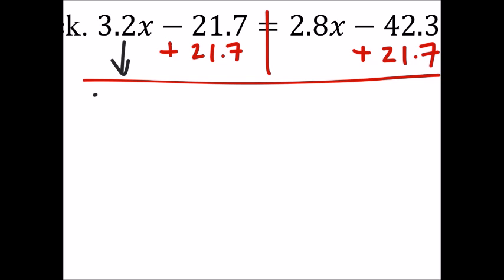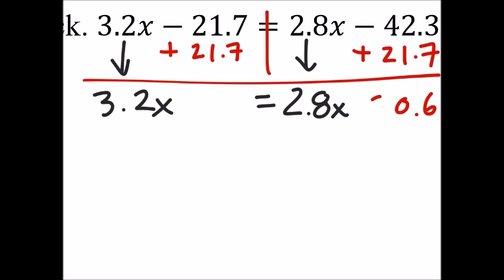And we still have this 3.2x, and we haven't done anything with the 2.8x. And negative 42.3 plus 21.7 is, what the heck is that? 6, 0, 20.6. So minus 20.6. So that's a negative 42.3 there.